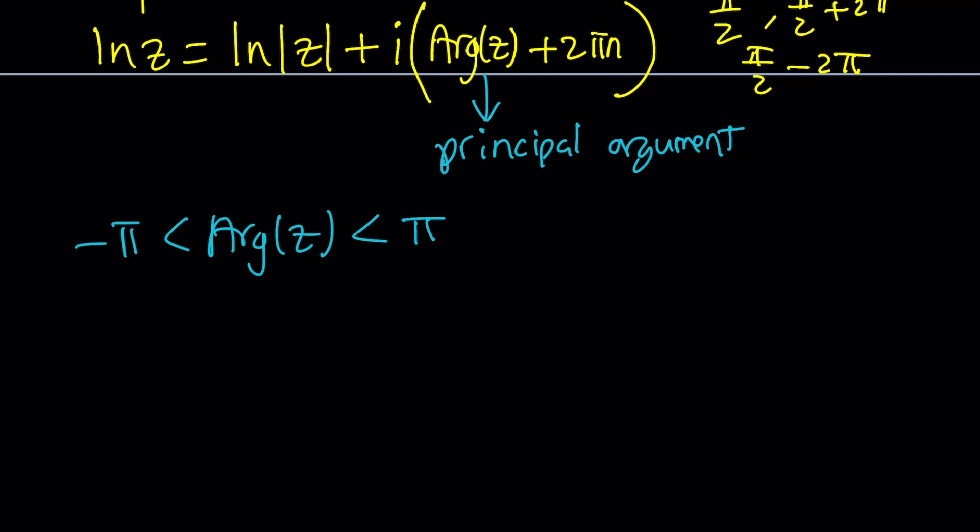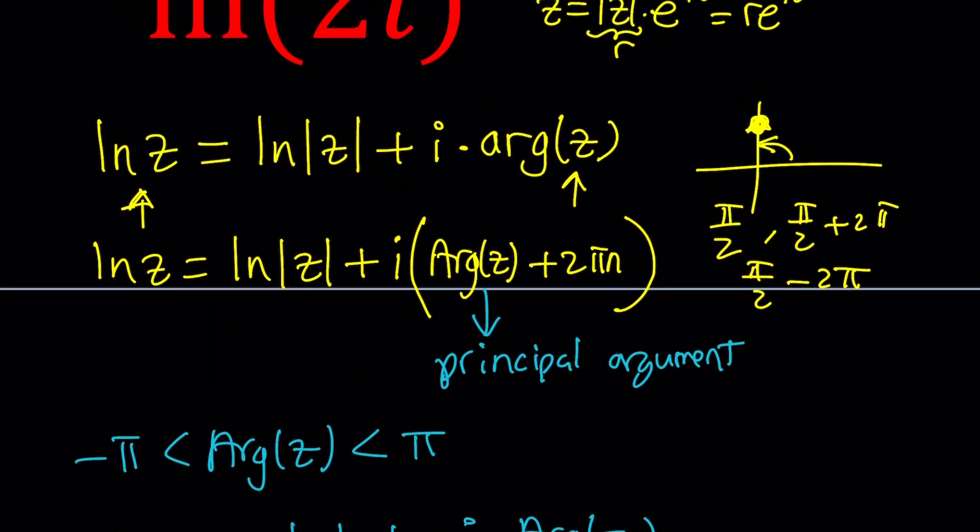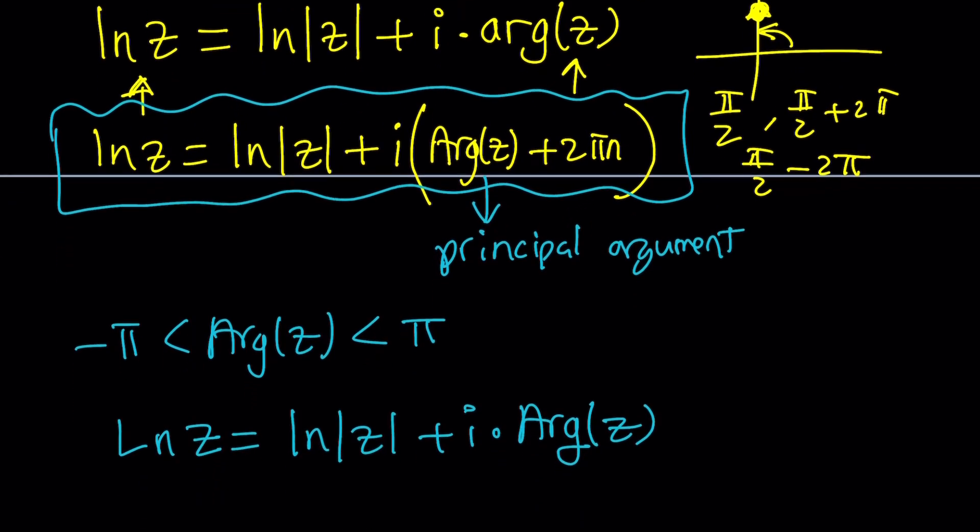And the principal argument, the big A, the arg z with a big A, is basically defined to be between negative pi and pi. So we get a unique value on the argument plane. Make sense? So we can also talk about the principal value of the logarithm. And for that one, we can use a capital L for ln. And that can be written as ln absolute value of z plus i times the argument, which is a big A in this case. And that happens to be the principal argument. Make sense? So this is a unique value, but there are infinitely many values, which is basically given by this. So this is basically kind of like an intro to the complex logarithm.